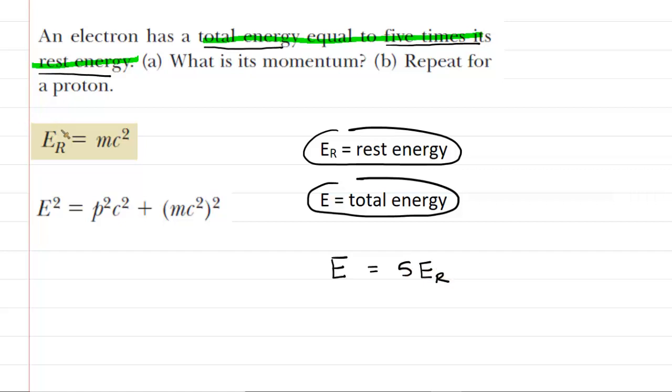Now of course, we also know that the rest energy is equal to mc squared, and then we also have this equation that relates the total energy to the momentum as well as to the rest energy mc squared. So the trick is to combine all of these equations together. And we can do that first by noting that this E right here, that total energy can be substituted with the expression five times E sub R.